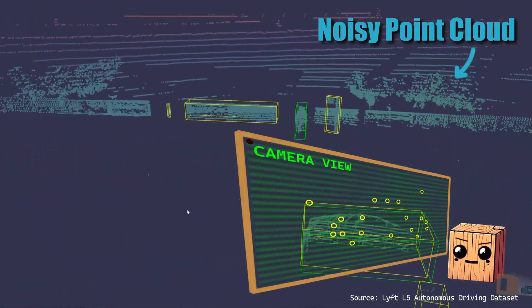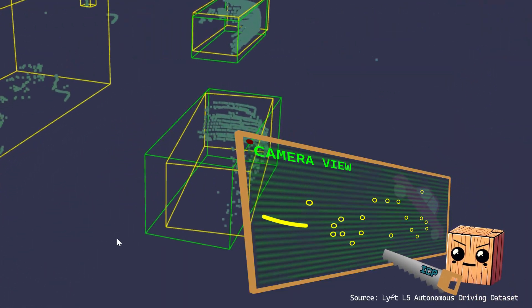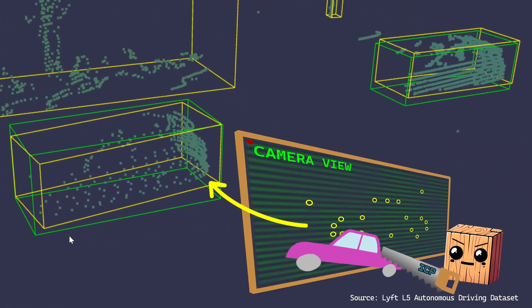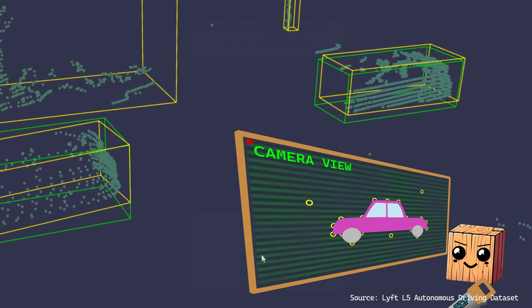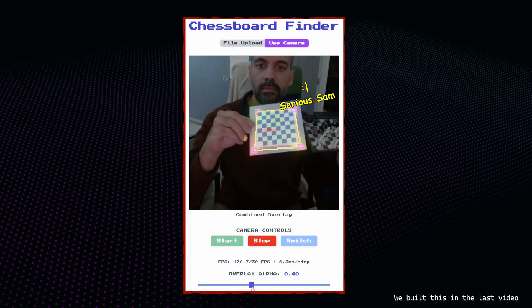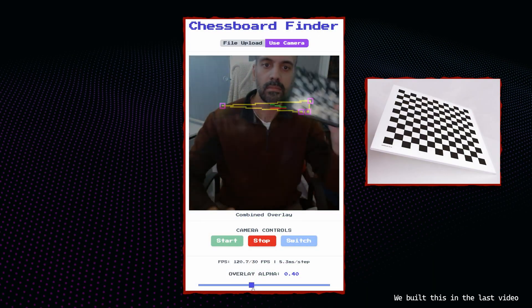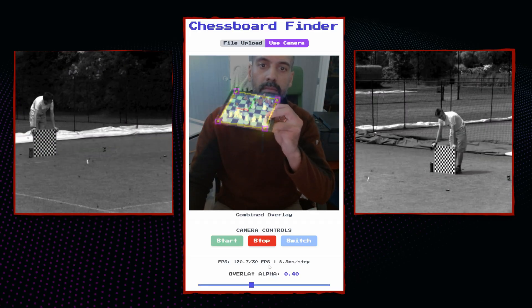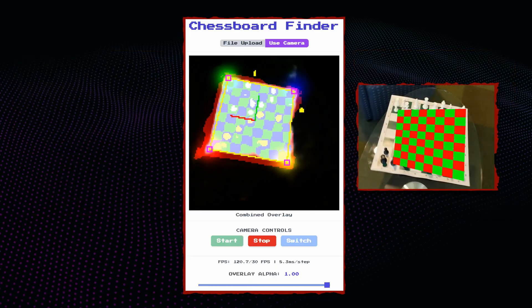That's where workhorse algorithms like RANSAC and ICP shine. They cut through the chaos to find structure. But here's the paradox. This is a checkerboard, perfect grid, clean corners. We literally use it to calibrate cameras. It should be the easiest target. But these powerful algorithms fail badly.